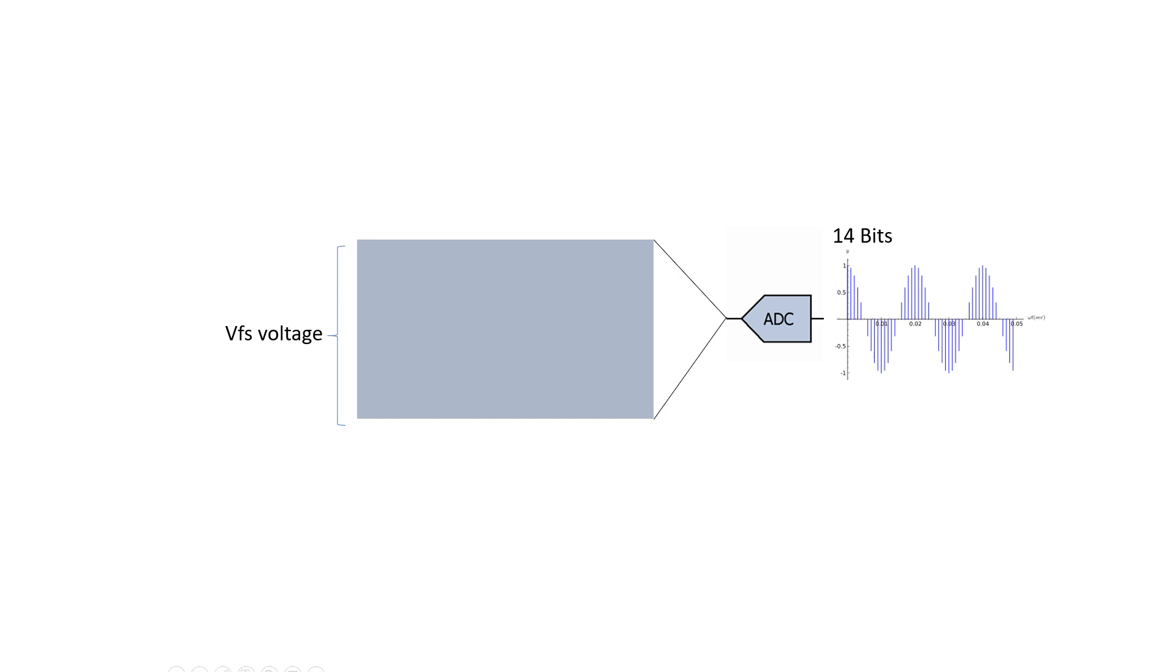Consider a signal coming in at a voltage same as V full scale voltage. Here this input signal is discretized and each level is rounded off to the nearest level of the ADC.